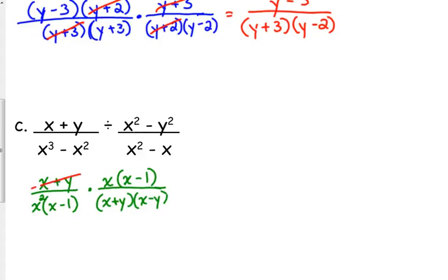So we've got x plus y in the top and in the bottom. We've got an x minus 1 in the top and the bottom. We have an x and an x squared. So we are left with 1 in the numerator. We've got one x left in the denominator and the x minus y left in the denominator.